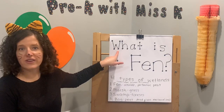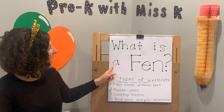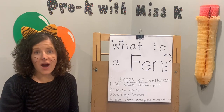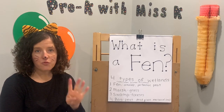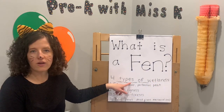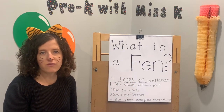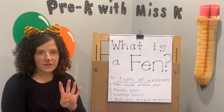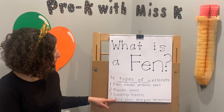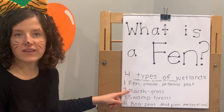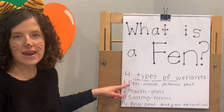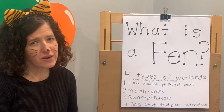Our question today: what is a FEN? A FEN is one of the four kinds of wetlands. A wetland is where water covers the soil or is near the surface of the soil for either most of the year or part of the year. The four different types of wetlands are a FEN, marsh, swamp, and a bog. There's a marsh dominated by grass, a swamp dominated by forest, and then there's bog and a FEN.